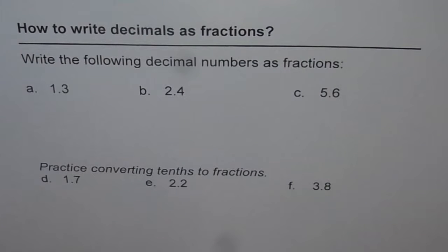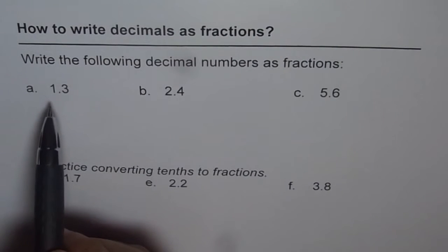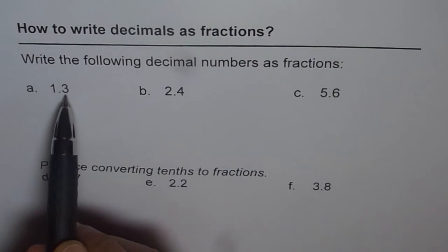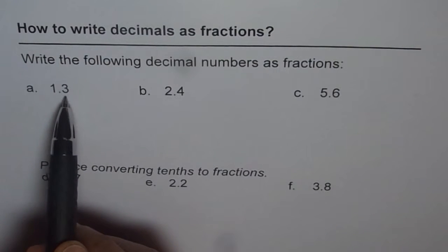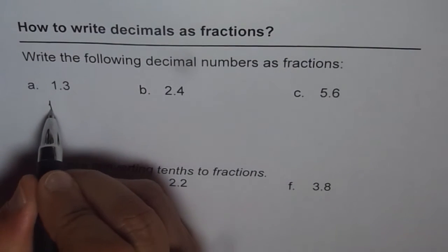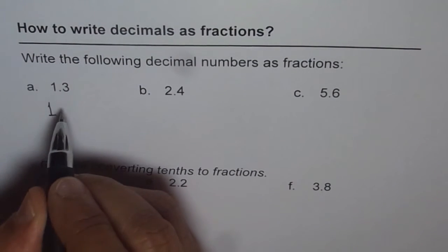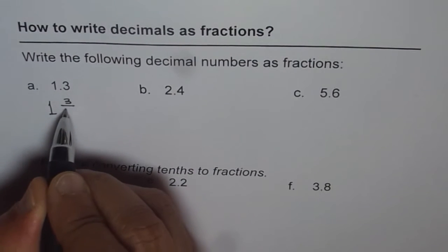Now as before, let us try to read this. 1.3 or 1 whole and 3 tenths. 1 whole that means 1 whole and 3 tenths. 3 out of 10.